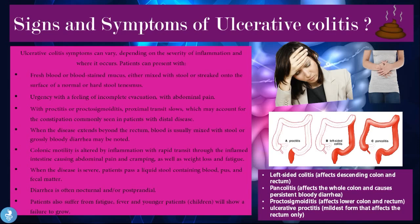The signs and symptoms of ulcerative colitis can vary depending on the severity of inflammation and where it occurs. Patients can present with fresh blood or blood-stained mucus mixed with stool or streaked onto the surface of a normal or hard stool, tenesmus, urgency with a feeling of incomplete evacuation, and abdominal pain. With proctitis or proctosigmoiditis, proximal transit slows, which may account for the constipation commonly seen in patients with distal disease. Proctitis refers to inflammation affecting just the rectum.